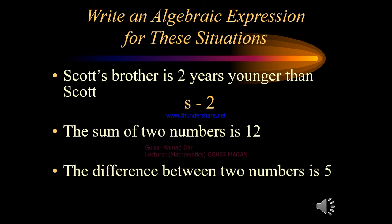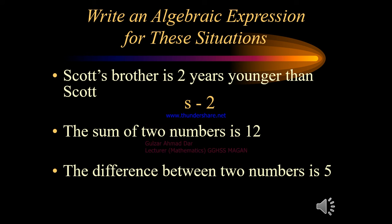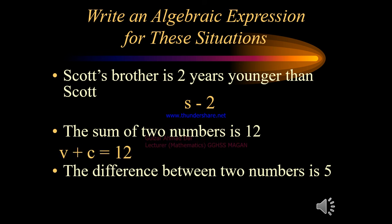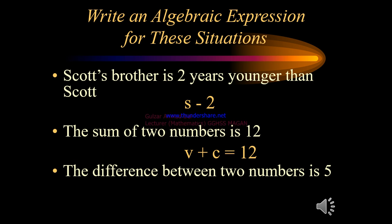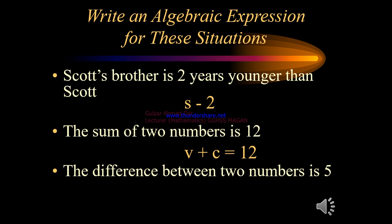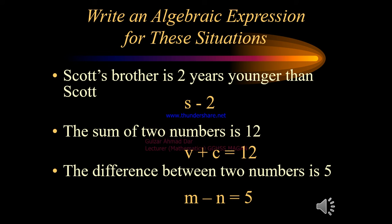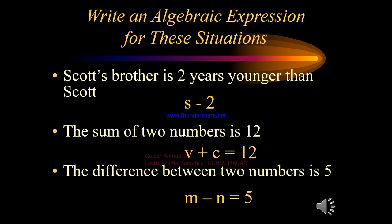Another situation: 'The sum of two numbers is 12.' If we represent the two numbers by x and y, the expression is x plus y equals 12. You can also represent it as a plus b equals 12, or m plus n equals 12. A third situation: 'The difference between two numbers is 5.' If one number is m and another is n, the expression is m minus n equals 5.